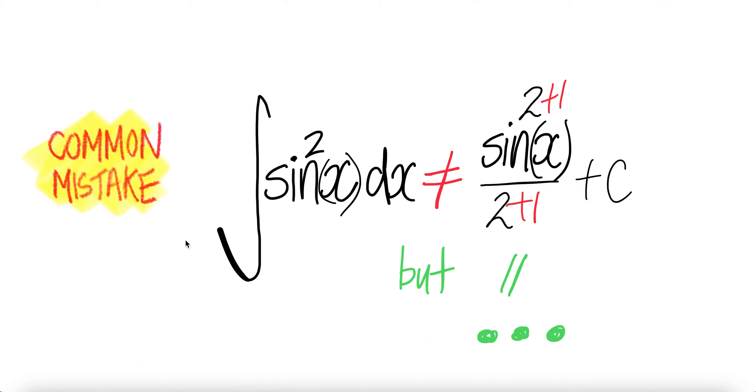Hello, let's look at a common mistake. The integral of sin squared x dx is not equal to sin x to the 2 plus 1 over 2 plus 1 plus c, but it's equal to this.